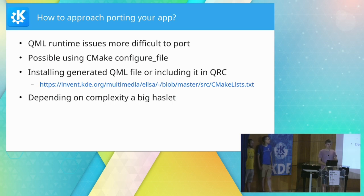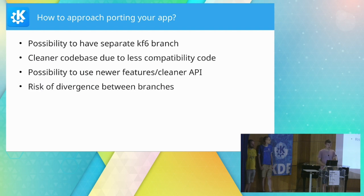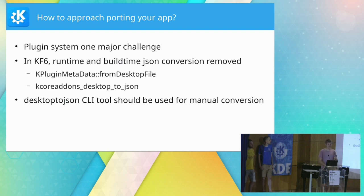Those need to be adjusted with a preprocessor macro. In some code you can still see a Qt version check being used, but if we only want to differentiate between version 5 and 6 we can use the major version directly and don't need to use the Qt version check. QML runtime issues are more difficult to port, especially when they are incompatible with KF5. It is possible to configure those files using CMake's `configure_file` method to dynamically inject certain strings, then install the generated QML files or include them in a QRC — that's what's done for example in Elisa.